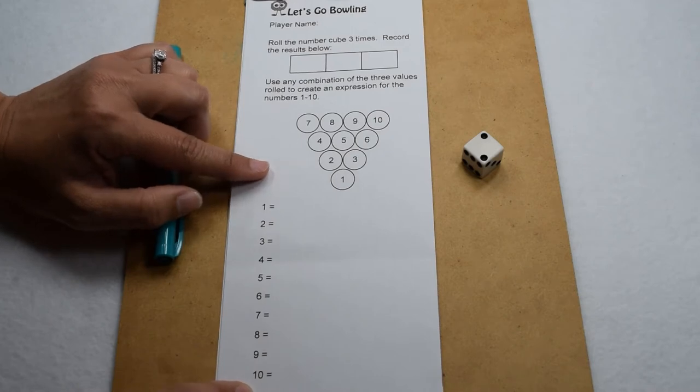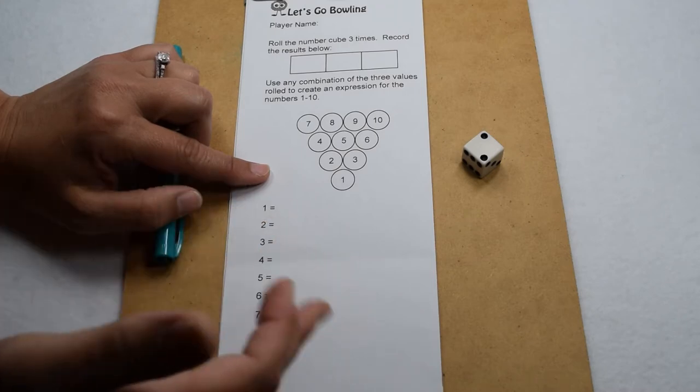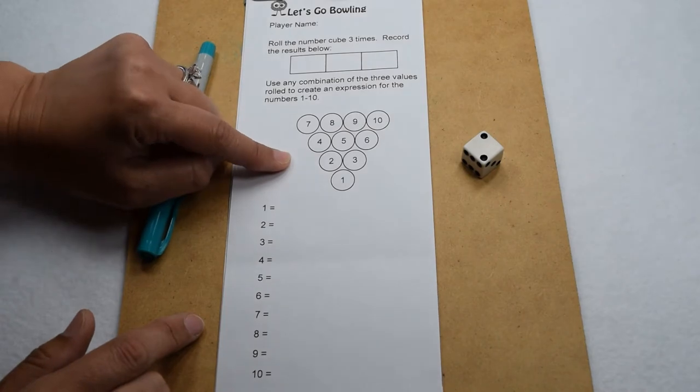To come up with the other values, we could do things like adding, subtracting, multiplying, dividing, using order of operations, squares, square roots, factorials, or really any operation that we know to come up with all ten values.